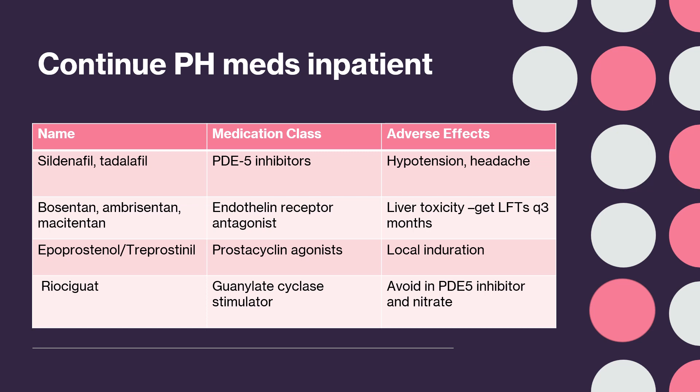Now let's discuss specific treatment by group. For group 2, pulmonary hypertension secondary to heart disease, the plan is to diurese. For group 3, which includes lung disorders, oxygen in addition to supportive measures is the treatment.